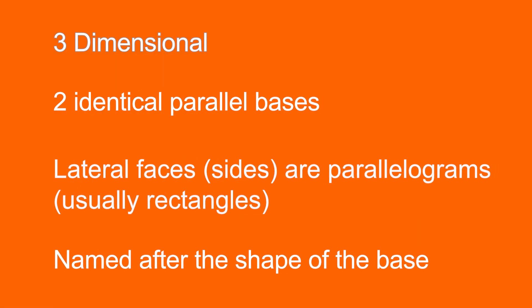If we're talking about prisms, it's helpful to know a couple of the things that make up a prism. It's a three-dimensional object that has two identical parallel bases — like the top and the bottom. The lateral faces, the sides, are parallelograms, usually rectangles, and it's named after the shape of the base.